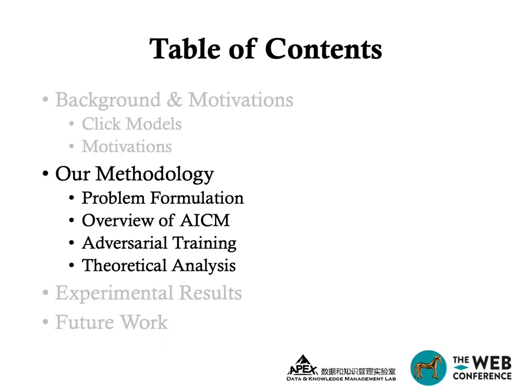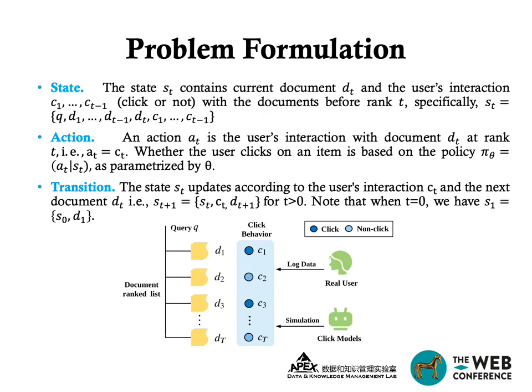After background and motivations, we will introduce our method in detail. We formulate the click model as a sequential decision-making process with three major components. The state ST contains the current document, previous document, and previous user interactions. The action AT is the user's interaction with the current document, also defined as CT. The state updates according to the user's interaction CT and next document DT.